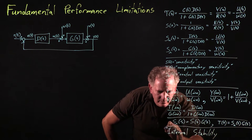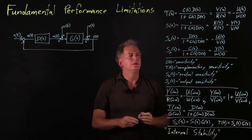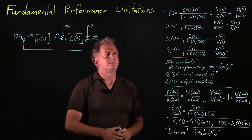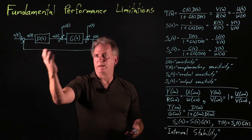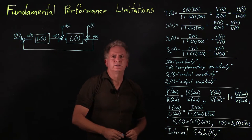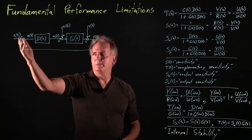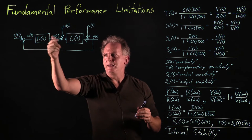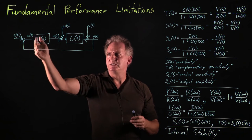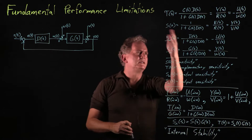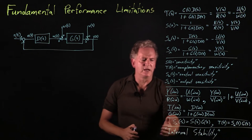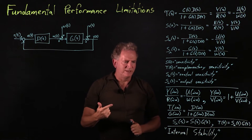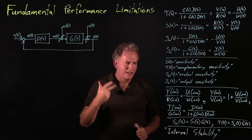Internal stability means simply that all four of these transfer functions are stable. You might be tempted to say stability means T of S is stable — and that's a good starting point, meaning Y doesn't blow up as long as R doesn't blow up. But in order for the interior signals not to get large even if the output is bounded, we want all the other sensitivities to be stable as well. So not only do we need T of S to be stable, but we need Su of S, S of S, and Si of S to all be stable.